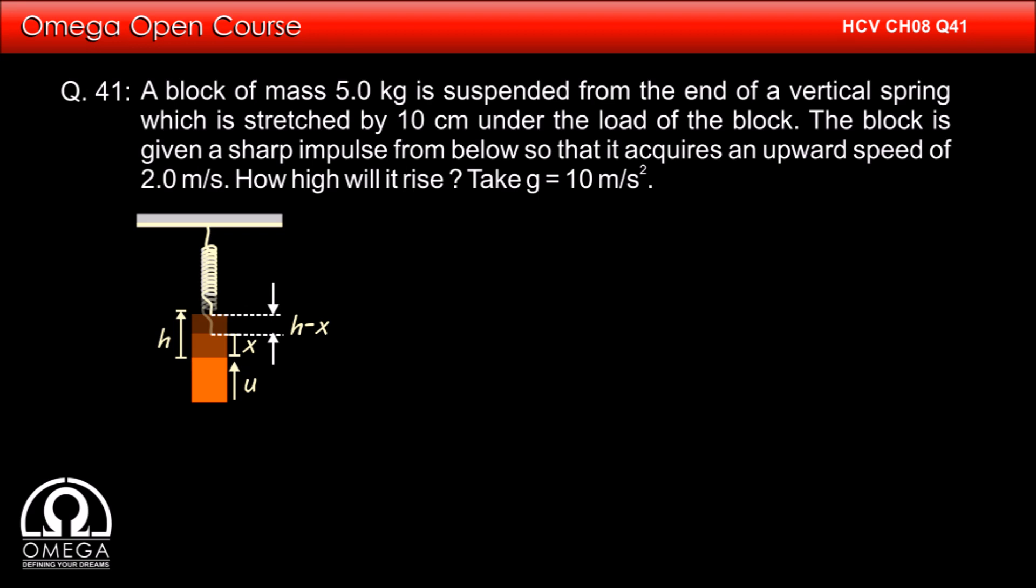If we take the position of the block at equilibrium as the reference for the gravitational potential energy, the initial gravitational potential energy of the system is 0. Since the block is moving, its kinetic energy is half mv square. The spring at this point is elongated by x, so the spring potential energy of the system is half kx square.